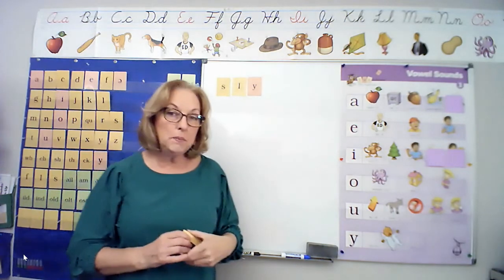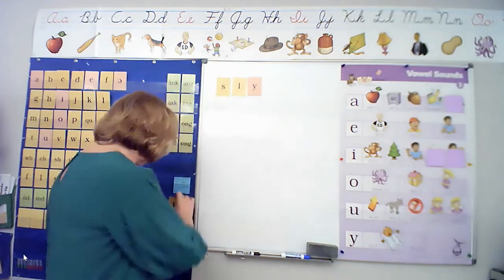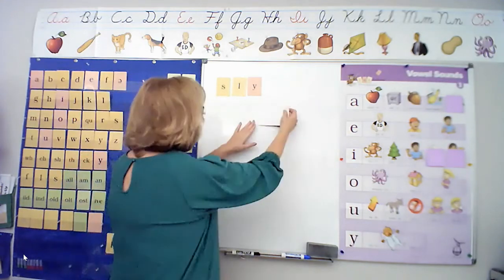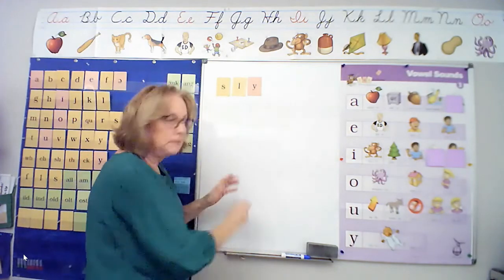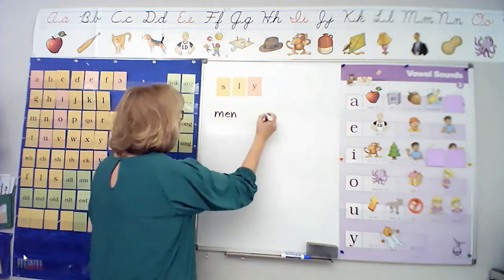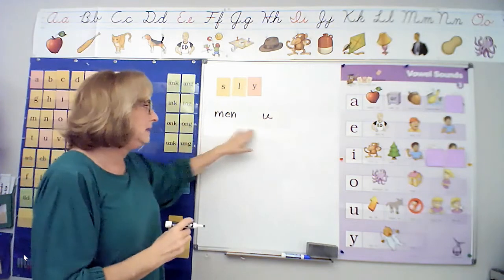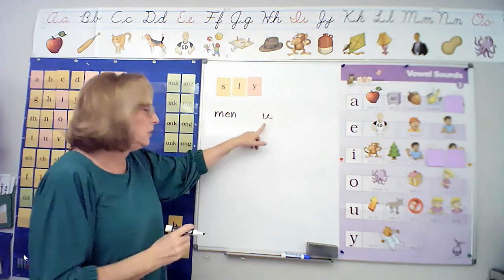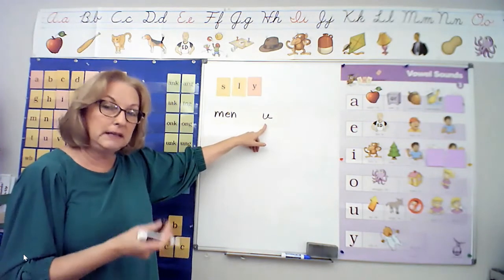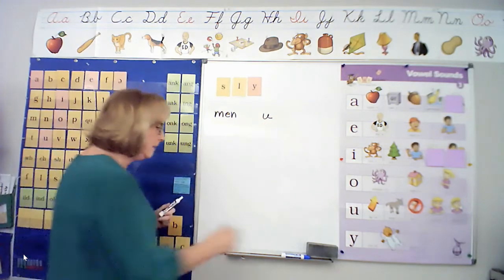I'm going to leave this word up here to remind us that Y can be a vowel in an open syllable. And in a one syllable word, it says I. Now we can find open syllables in the final syllable of a word. Let me show you. There's my syllable frames. I'm going to put up two frames for a two syllable word. First syllable is in the second syllable. Let's read this word together. Men, you, menu. So the U is in the final syllable and it's an open syllable and it has the long vowel sound U.